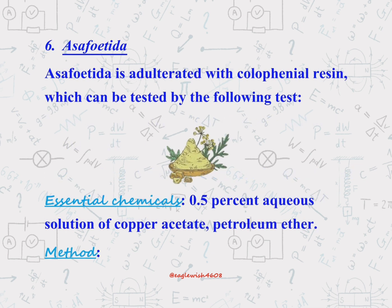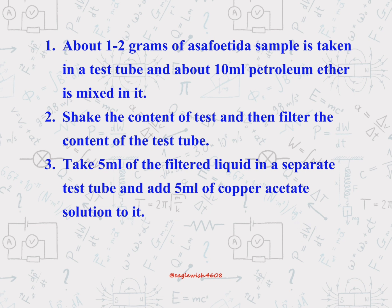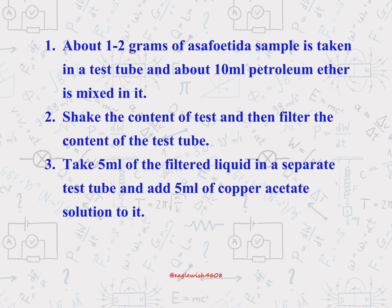Finally, we'll look at asafoetida, which is sometimes adulterated with colophenyl resin. We'll demonstrate the chemical method to detect this adulterant.